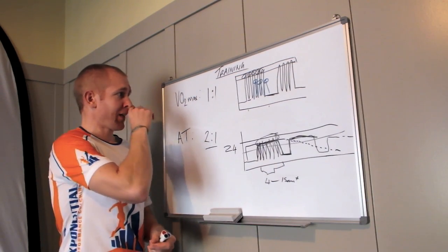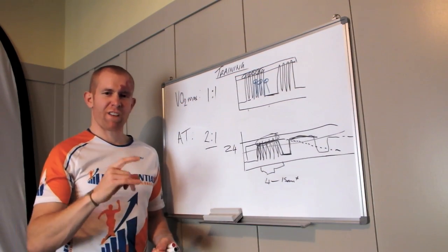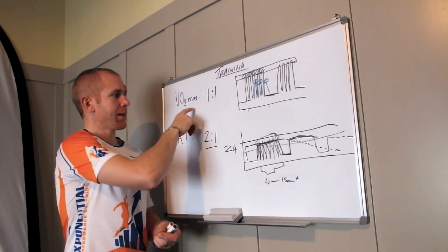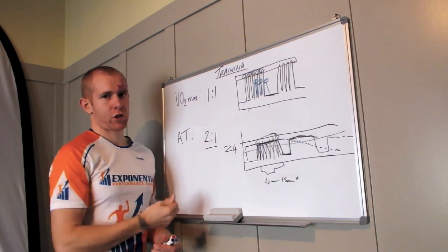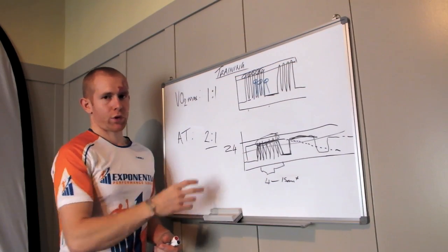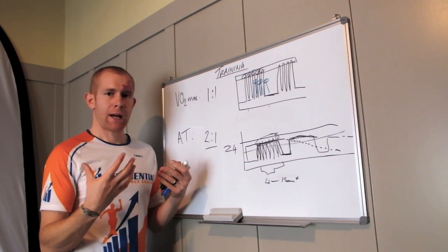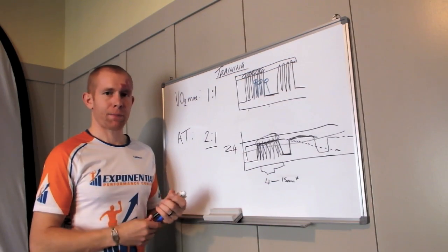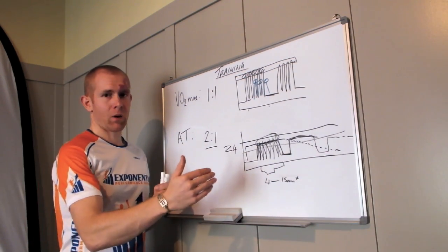So there you have it. Key thing with VO2max intervals, one-to-one work to recovery, really focusing on high intensity, maximal efforts. And then anaerobic threshold, two-to-one work to recovery ratio, so we work longer to build up that blood lactate and other metabolic byproducts, so our body gets better at dealing with them, and slightly longer intervals.